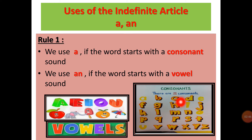In English, we have 26 alphabets, out of which 5 are vowels and the remaining 21 are consonants. A, E, I, O, U are known as vowels, and the rest — B, C, D, F, G, H, J, K, L, M, N, P, Q, R, S, T, V, W, X, Y, Z — these 21 alphabets of English are known as consonants.